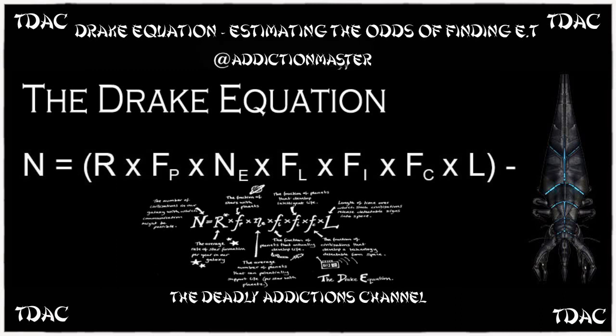Red dwarf stars are more volatile than our sun, particularly when young. They can send out flares and coronal mass ejections — charged particles — which over time can slowly rip away an atmosphere by removing molecules from the top, according to 2017 studies led by NASA Goddard Space Flight Center. Even if a star doesn't send out CMEs, it may blast out X-ray radiation, which could kill any life on the surface.